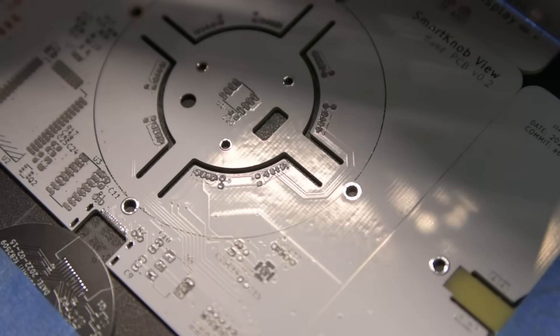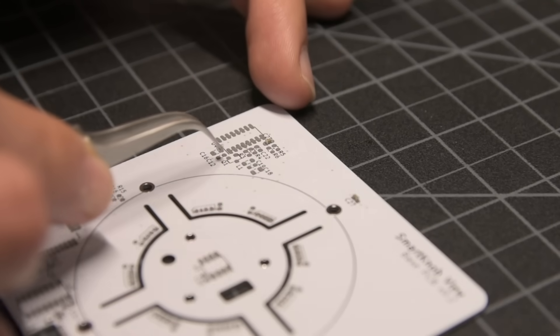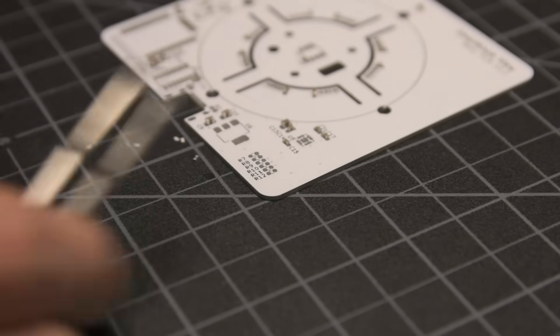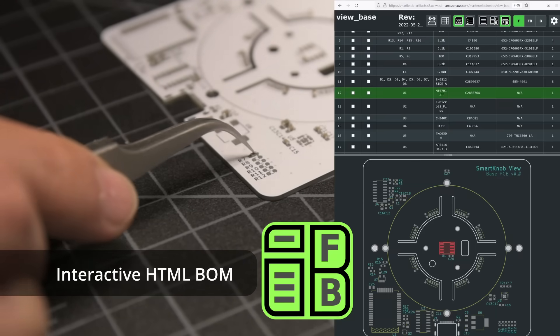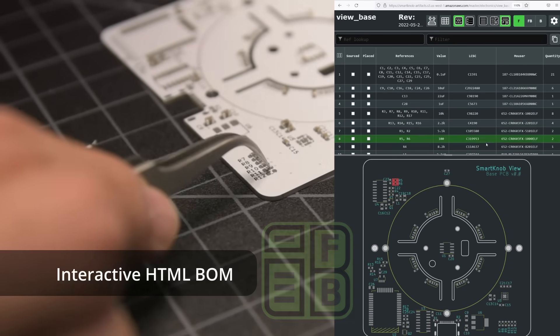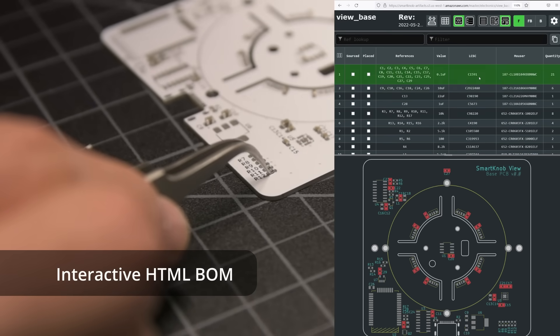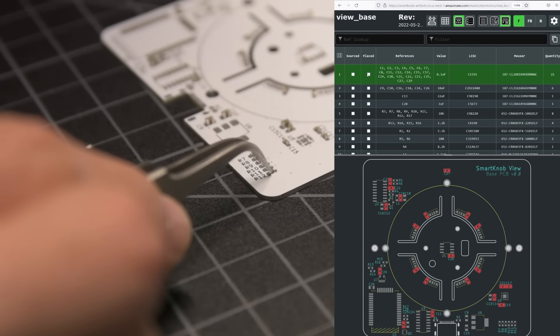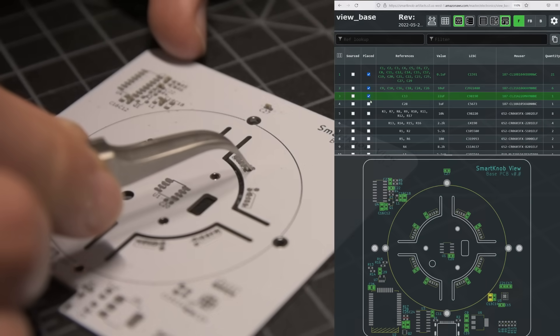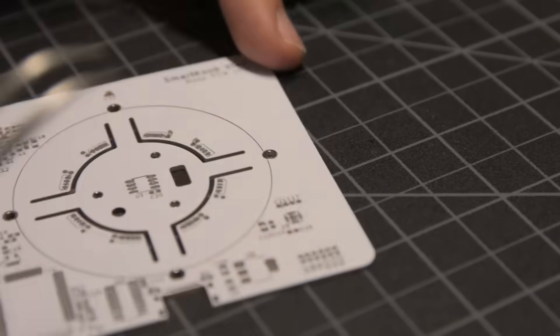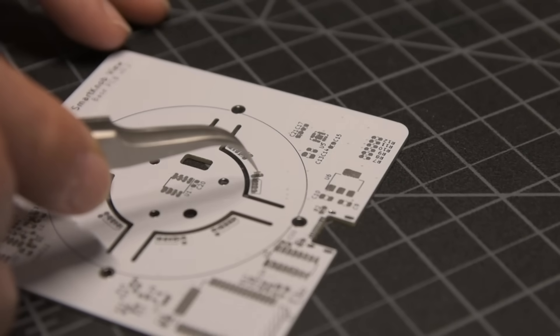Then I place each component into the appropriate slot, starting with the smallest resistors and capacitors. But with so many small components, you might be wondering how I know where each is supposed to go. I'm using a really awesome plugin for KiCAD called Interactive HTML Bill of Materials, which automatically generates a website showing you where each component belongs, and it lets you check them off as you place them. Often you'll use the same component in multiple places, like these 21 identical capacitors, so this makes it really easy to see where they all belong.